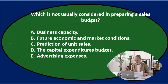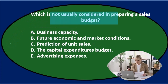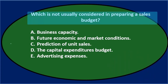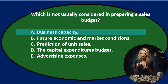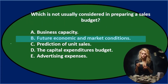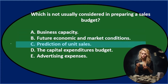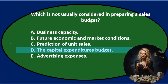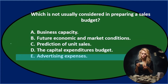Next question: which is not usually considered in preparing a sales budget? A. Business Capacity. B. Future Economic and Market Conditions. C. Prediction of Unit Sales. D. The Capital Expenditures Budget. E. Advertising Expenses.